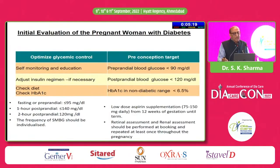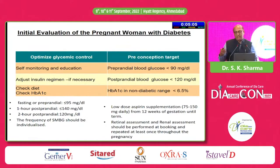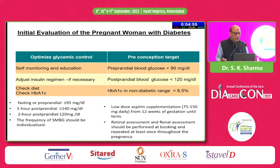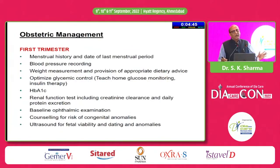In the initial evaluation of pregnant women with diabetes, the patient must have self-monitoring of blood glucose, adjust insulin regimens according to sugar profiles, and check diet, exercise, and HbA1c. The targets to achieve are: fasting less than 95 mg/dL, one-hour postprandial less than 140 mg/dL, and two-hour postprandial less than 120 mg/dL. Low-dose aspirin after 12 weeks of gestation is recommended in many of these patients.